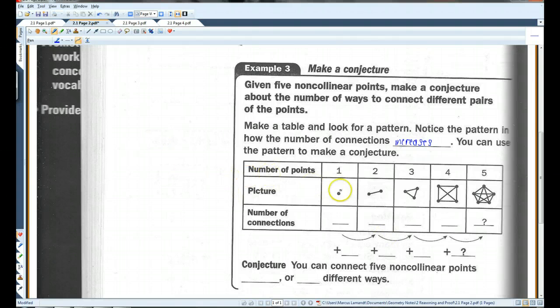So, in this case, when there's only one point, we have no connections. Two points, we have one connection. Three points, we have three connections. Four points, we have one, two, three, four, five, six. Six connections. Notice how when we get from this one to this one, we add one. From here to here, we add two. From here to here, we add three.